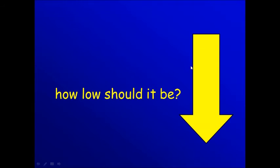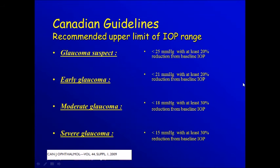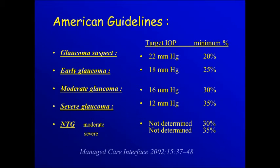Now, how low should we go? The Canadian guidelines give us this range depending on the stage of glaucoma, while the American guidelines give us these figures.